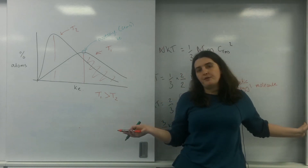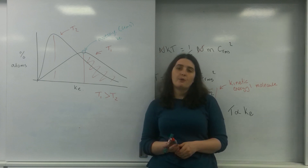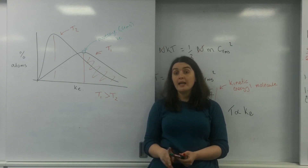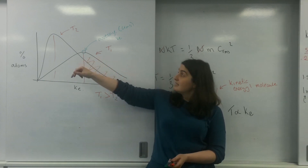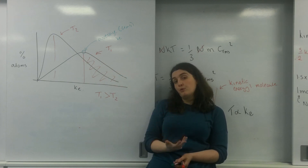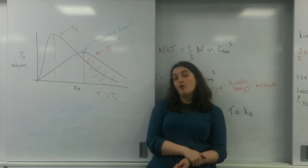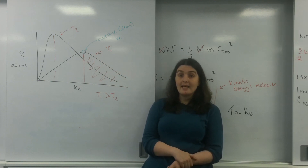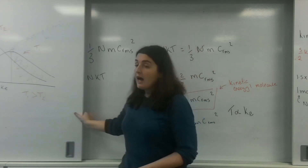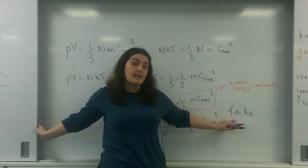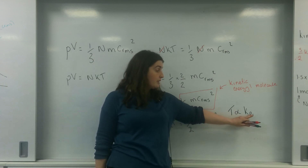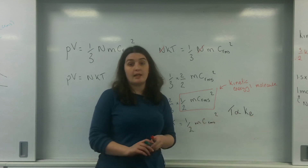So this is a graph you may see and be asked: which one is a hotter temperature and why? It is the broader curve because there is a greater proportion of particles with a higher kinetic energy. And because of this formula, you know that temperature is directly proportional to kinetic energy.